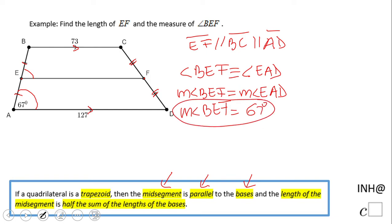But then we have another property for the midsegment. A midsegment is half, half of the length of the bases. So this is the meaning: EF is half of BC plus AD.